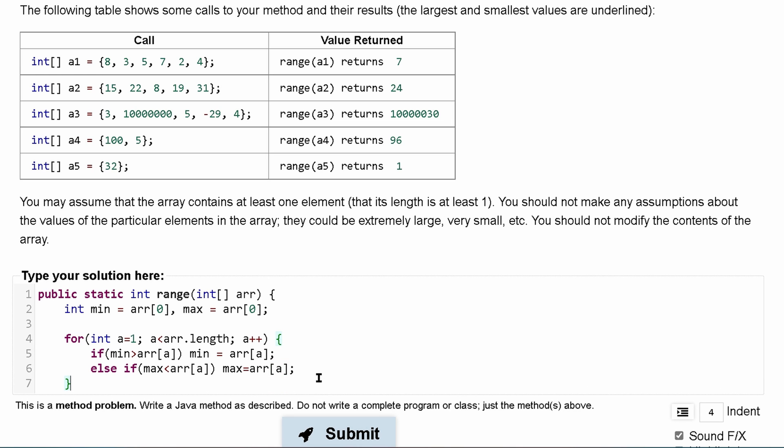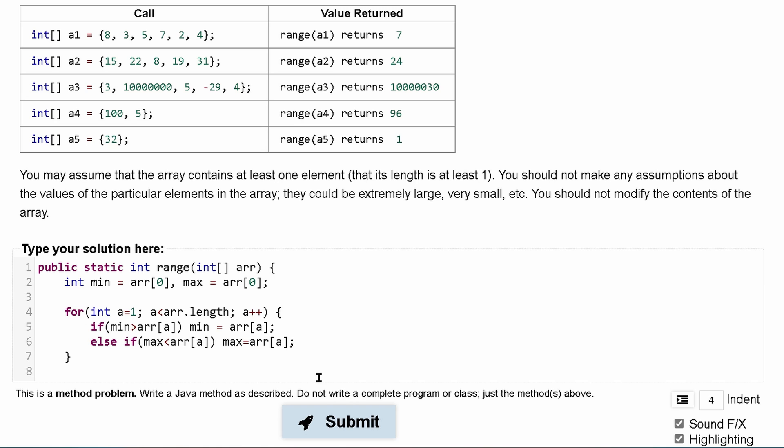That'll be it for our for loop. Now is where we are going to return. If our min is equal to max, then we're going to return one.